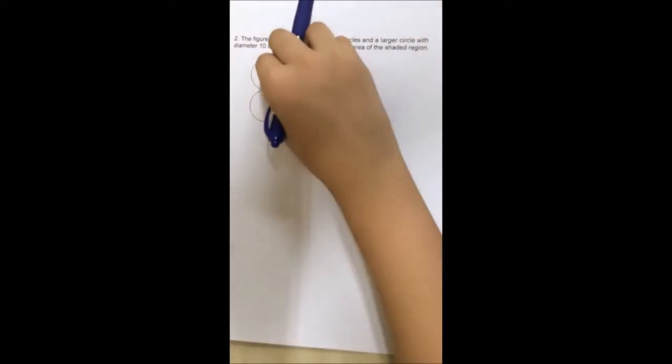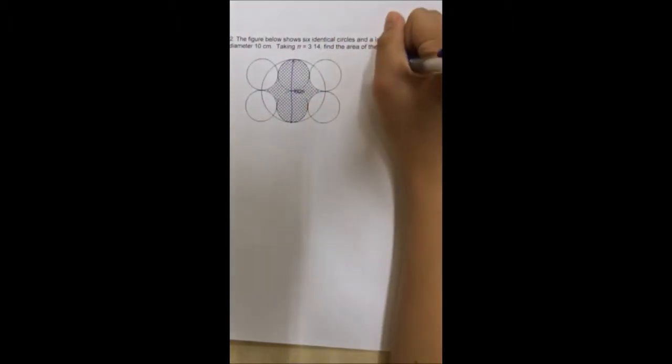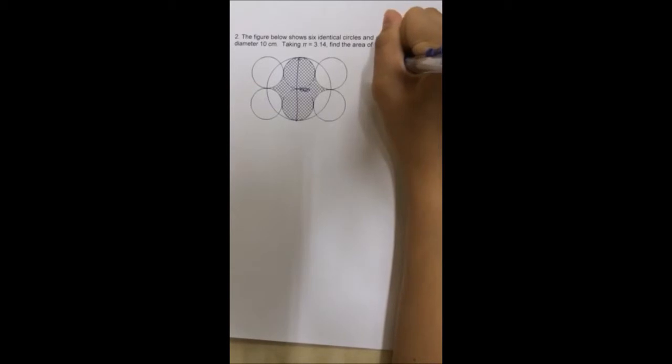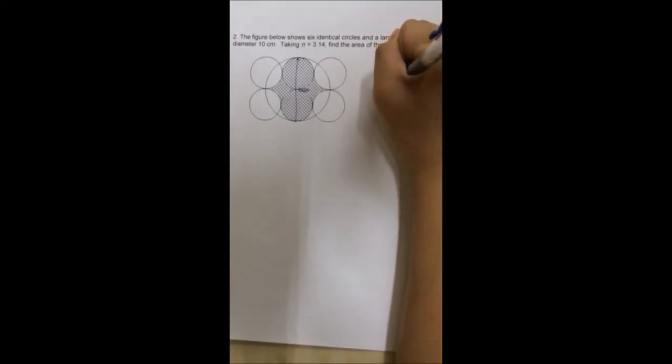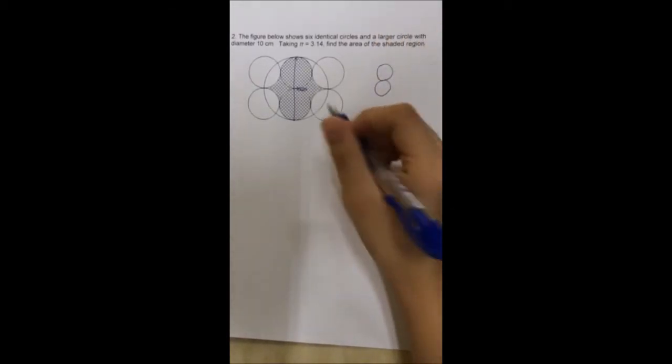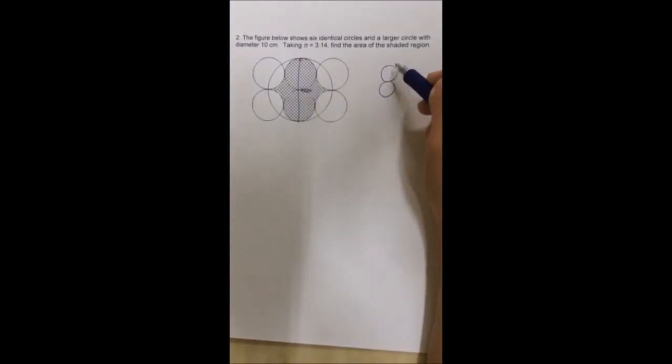First, we can take out the shaded area and put it on one side. So we have two circles. So how should we put the diamond outside then?